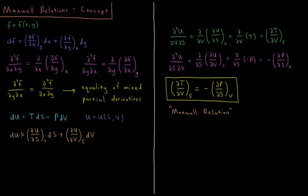The internal energy change is also equal to the partial derivative of internal energy with respect to entropy at constant volume times dS, plus the partial derivative of internal energy with respect to volume at constant entropy times the change in volume.